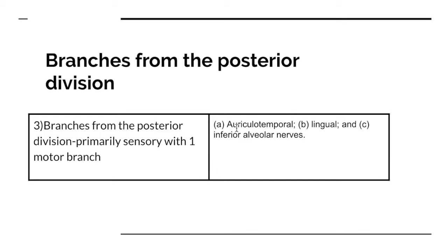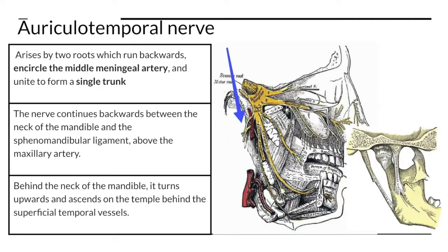Let's start by talking about the auriculotemporal nerve. The auriculotemporal nerve arises by two roots which run backward and encircle the middle meningeal artery and unite to form a single trunk.